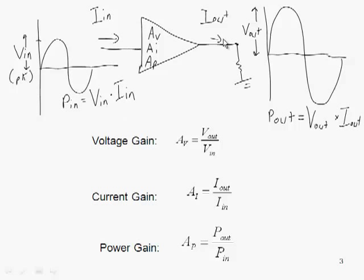At the output, we're going to have some amount of output current going through a load and some amount of output voltage. The output power is going to be equal to the output voltage times the output current. If we look at each one of these characteristics - power, voltage, and current individually at both the input and output - we can now see that we've got three different types of gain.